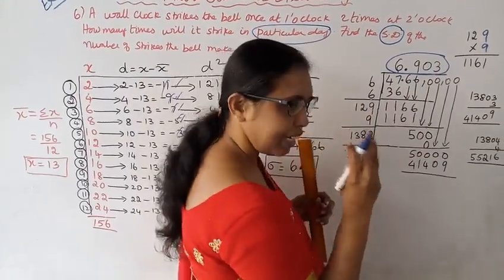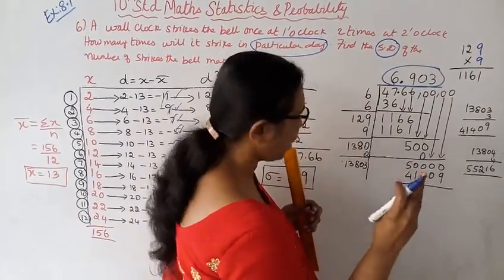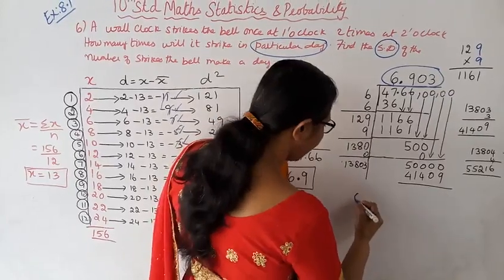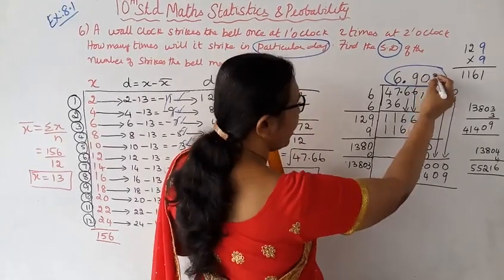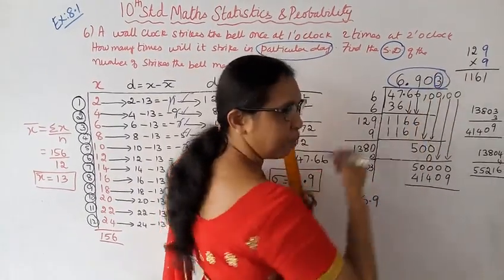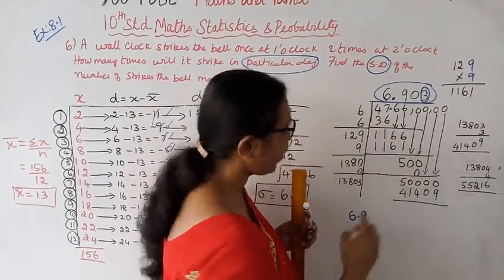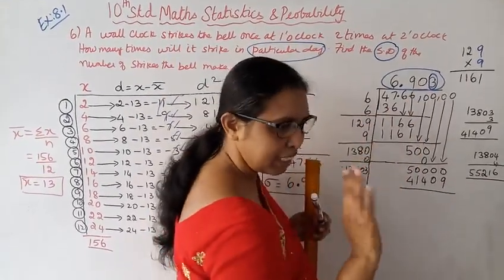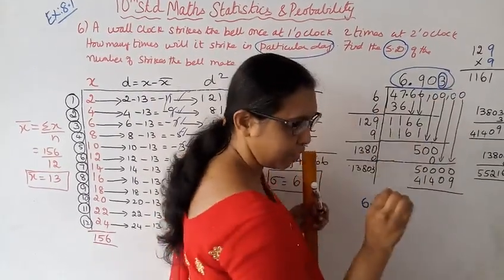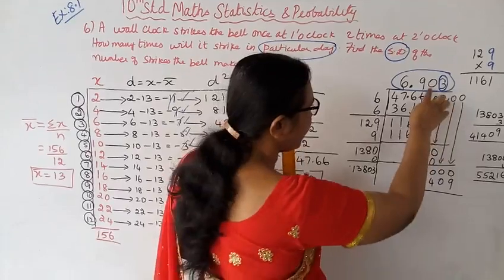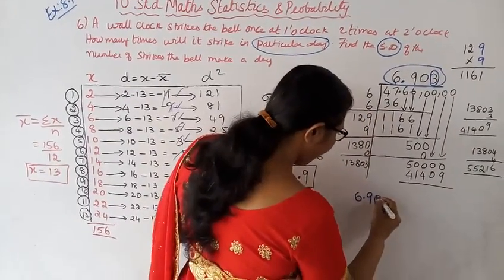We need three decimal places. The third decimal is less than 5, so we round down. Looking at two decimals, the answer is 6.90. Therefore the standard deviation sigma equals 6.90.